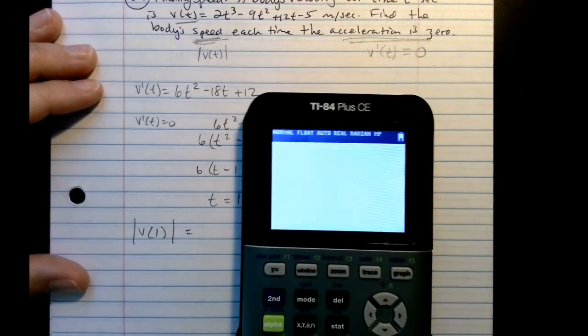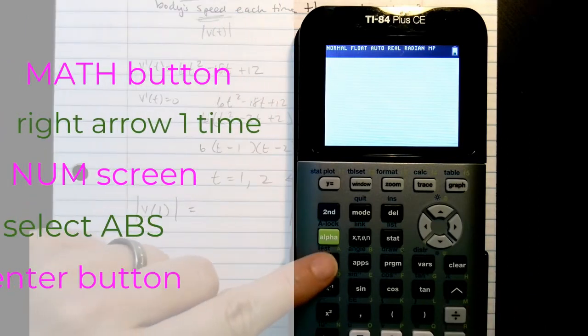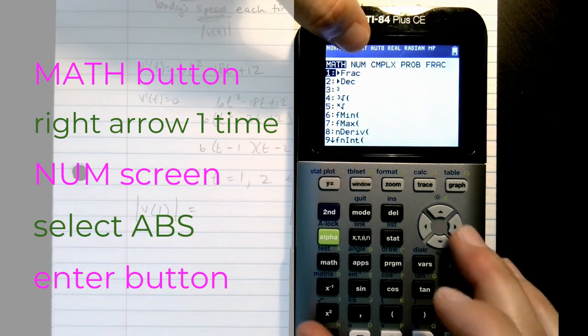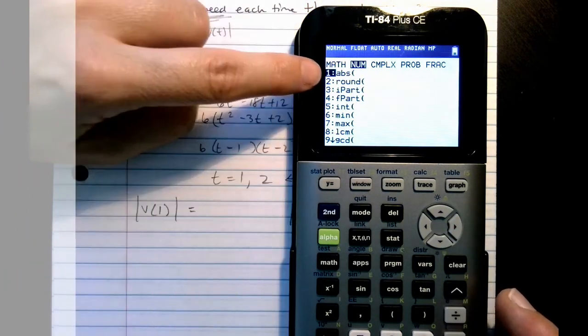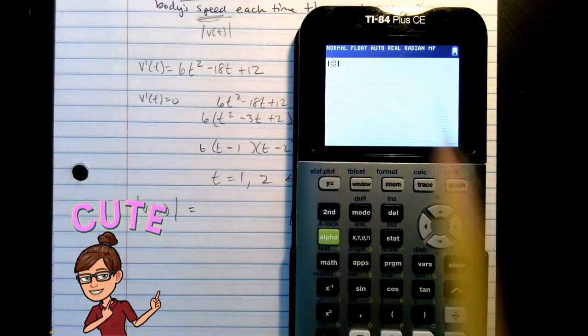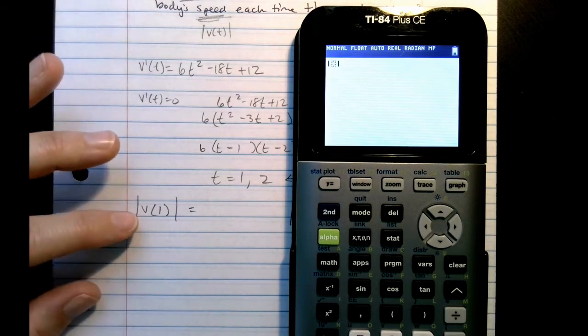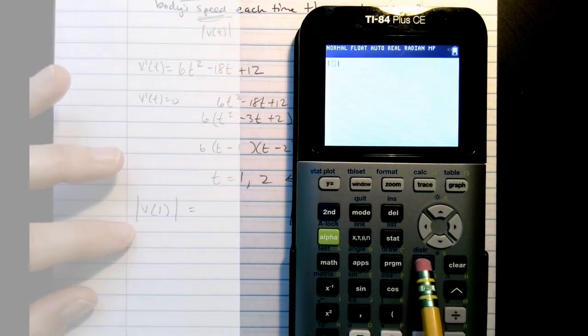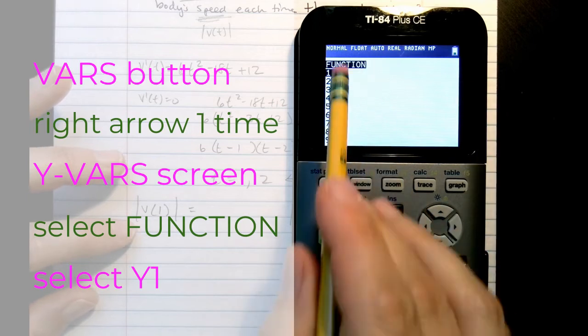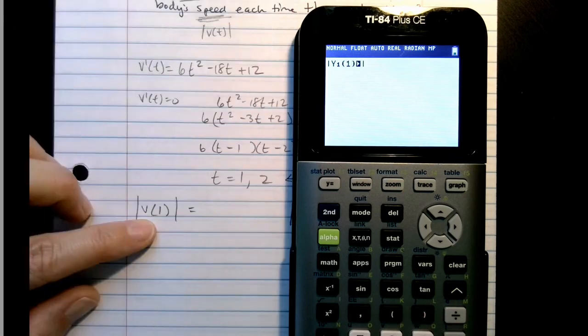Now, how do you do absolute values in your calculator? Here's how you do it. You're going to go to math. You're going to look for abs. But you're going to go to number first up here and find your abs right there, ABS. So we're going to say absolute value. Oh, look, it's so nice and cute. Now we're going to type in our velocity evaluated at 1. So do you remember how I showed you what to do? We're going to go to vars. Go to yvars. Select function. And we want y1 evaluated at 1. So parentheses 1. Enter.